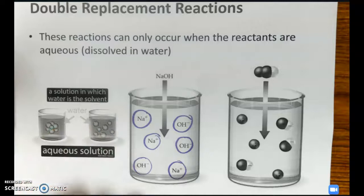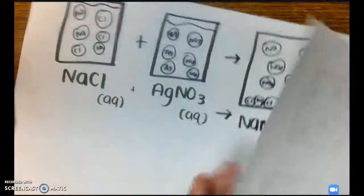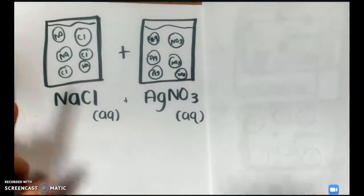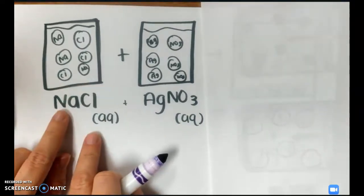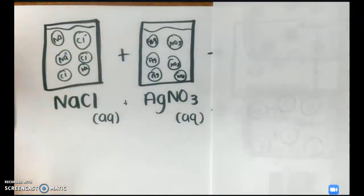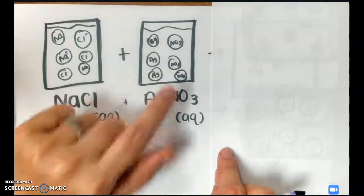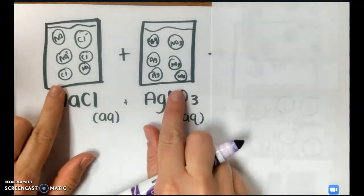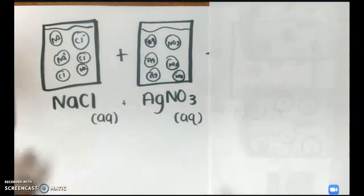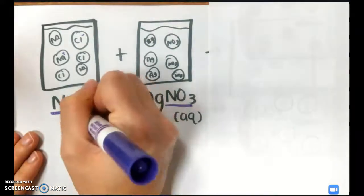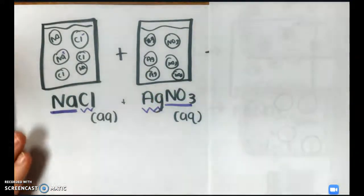Here is a picture of a double replacement reaction. We have our reactants: sodium chloride is aqueous, so in one beaker the ions are separated. The other reactant is silver nitrate, and the silver and nitrate ions are separated as well. Both are aqueous, so they're all dissolved in water. It's a double replacement, so outside goes with outside — they would form together, and the Ag and the Cl would form together.